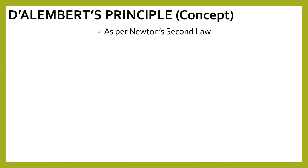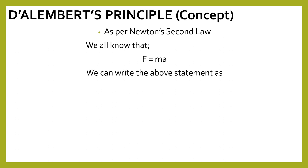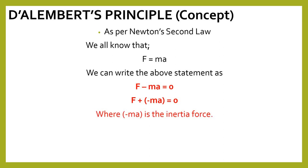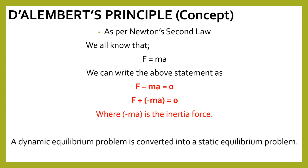The basic concept behind D'Alembert's Principle is Newton's second law, which states that force is equal to mass into acceleration. The same expression can be written as F minus ma equal to 0, or F plus minus of ma equal to 0. Here F indicates the force responsible for the motion of the body, and minus ma is the inertia force.